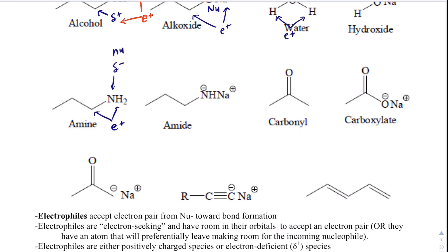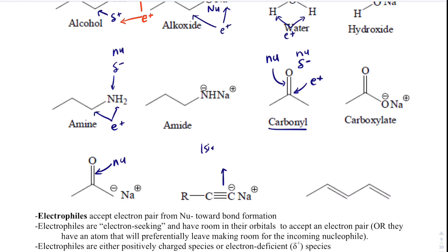A very common functional group is a carbonyl group — a carbon double-bonded to oxygen. Oxygen is delta-negative and is a nucleophile. That carbonyl carbon is a very common electrophile you'll see in organic chemistry. Additionally, double bonds and triple bonds are nucleophiles. A triple bond has one sigma and two pi bonds, and that is also a nucleophile.